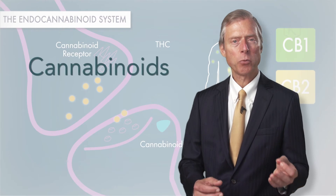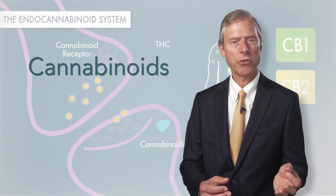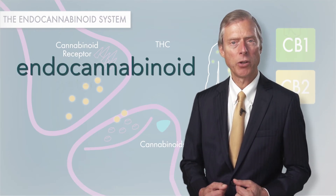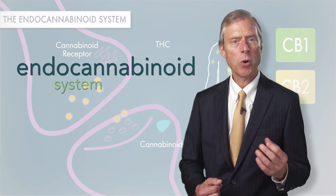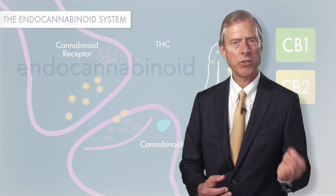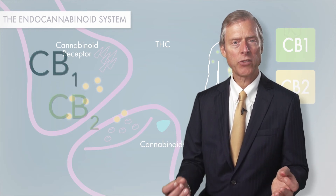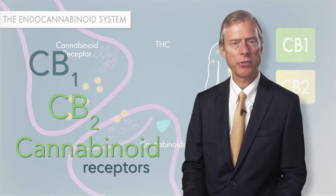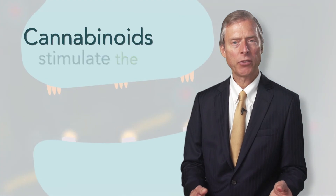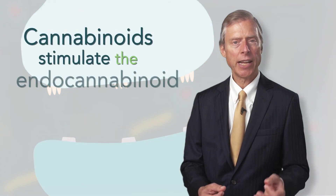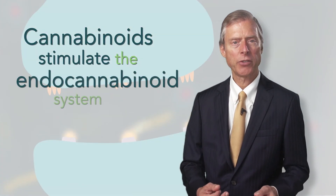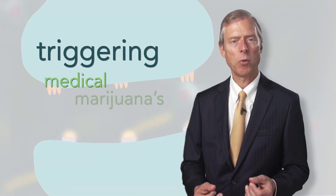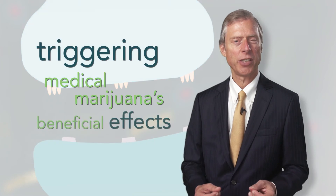Cannabinoids, regardless of their source, interact with the body's endocannabinoid system where they bind with the CB1 and CB2 cannabinoid receptors. Here, cannabinoids stimulate the endocannabinoid system, triggering medical marijuana's beneficial effects.